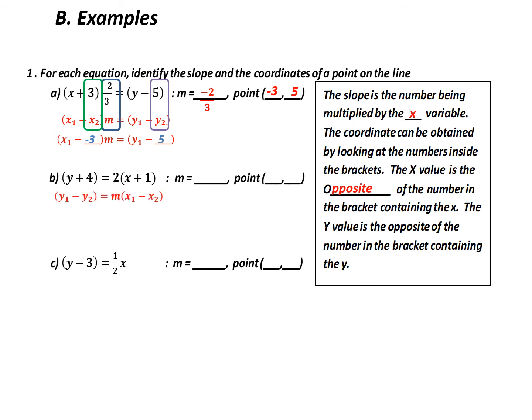Let's do the same thing for part b. Here's my base equation — notice I've switched to having m and the x values on the right-hand side, because in the original equation they are on the right-hand side. The slope matches up with 2, so my slope is 2. What x value would I subtract to get positive 1? That would be negative 1. And what value would I subtract to get plus 4? That would be negative 4. Notice that the signs of both values are opposite the ones in the equation.